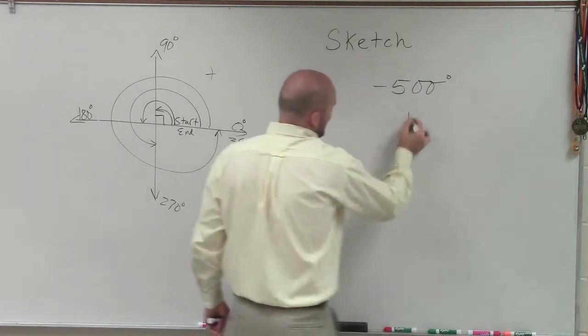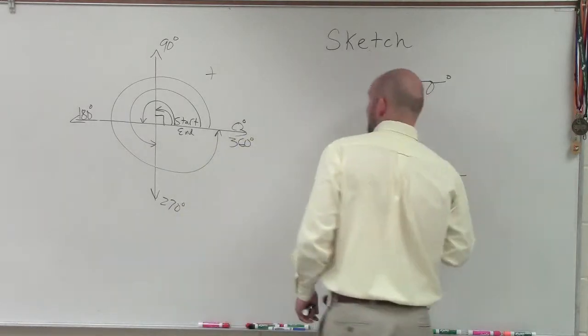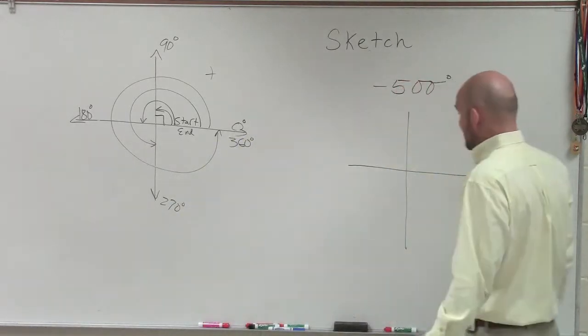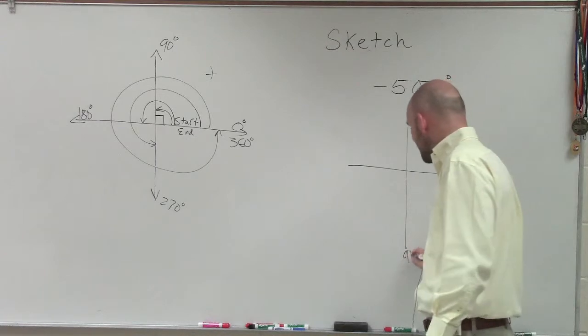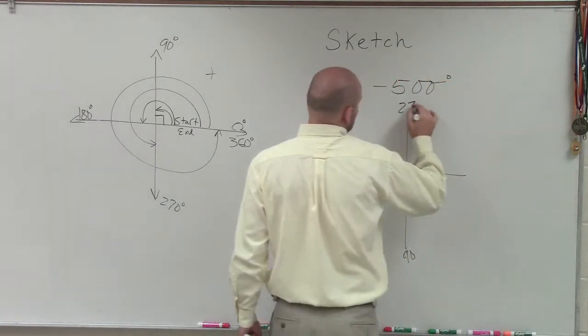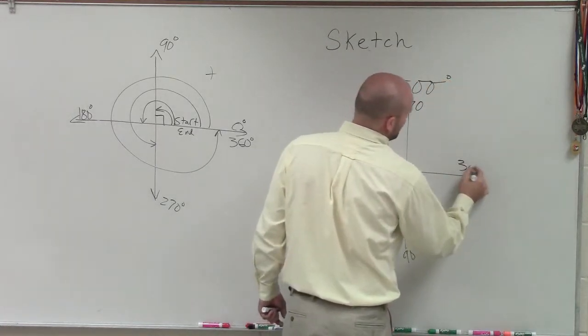And we notice that negative 500, that's going to be over one revolution of negative 360. So if this is now 90 degrees, 180, 270, 0, and 360.